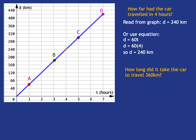Similarly, if we're going to ask something like this, how long did it take the car to travel 360 kilometers? Well, now we're being given the distance, and we've got to get back to the time. So let's read it from the graph first. We go from 360 to the graph, and we see we end up at that point there. And then we read down to see what time goes with that point, and we see that the time at that point is 6 hours. So reading from the graph gives us 6 hours. But of course, we could also have used our equation.